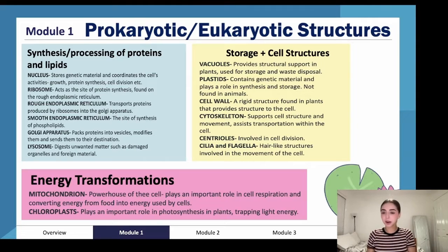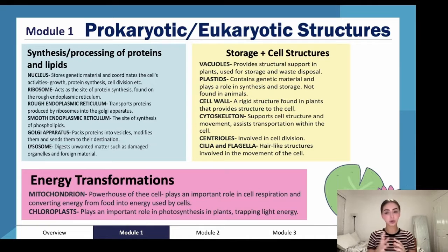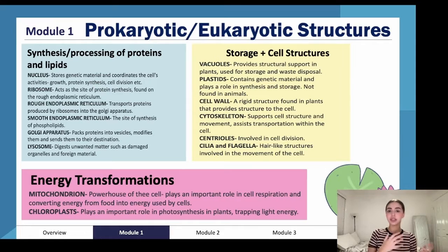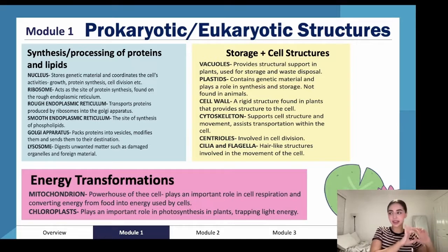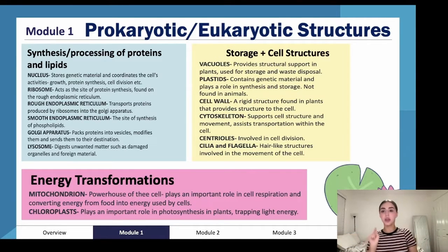The Golgi apparatus is the part of the cell that packs proteins into vesicles, modifies them, and sends them to their destination. After a protein is made, it needs to be folded in a particular way so it can perform its function — that's what the Golgi apparatus does before sending them off to do their job.